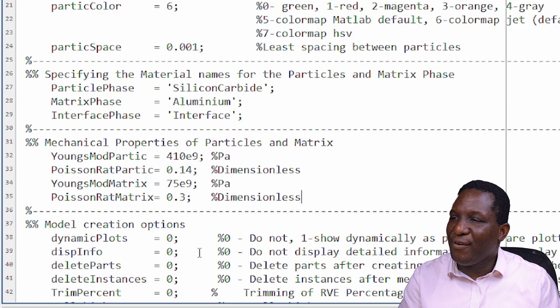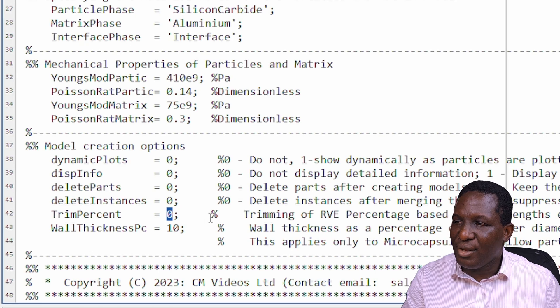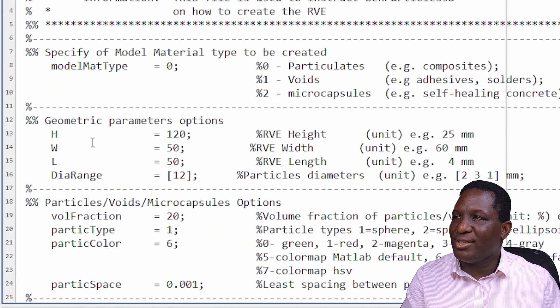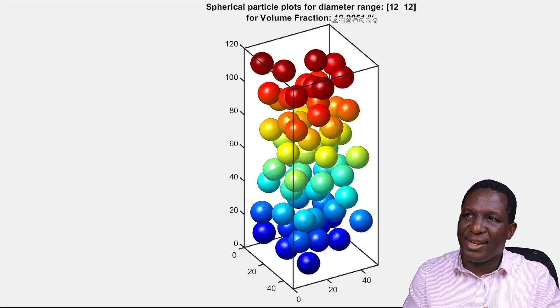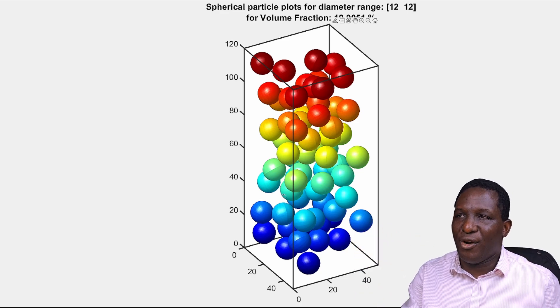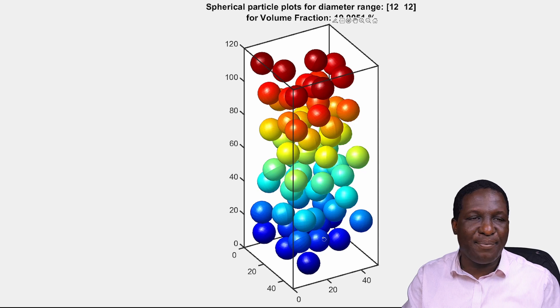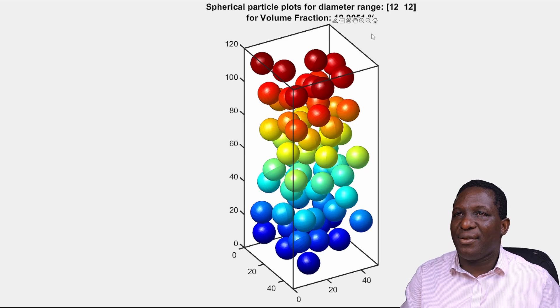I'll leave the trim percentage at zero, so it creates the RVE exactly as-is without trimming the edges. Then we run this code. What it does instantly is create the particulate system — a representative element in a cuboidal shape with overall height of 120 and width and length of 50 by 50. You can see the particles distributed within this domain, all 12 microns in diameter.